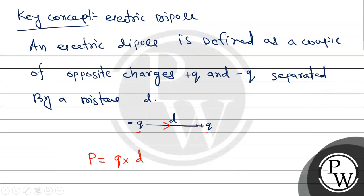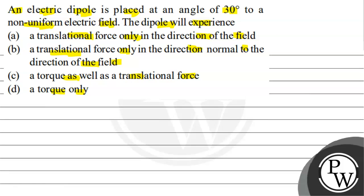Now come to the options. A translational force only in the direction of the field is wrong. A translational force only in the direction normal to the field is wrong. A torque as well as a translational force is wrong. A torque only, option D, is correct. I hope you understand the solution. Best of luck.